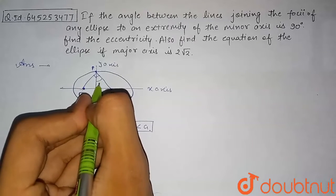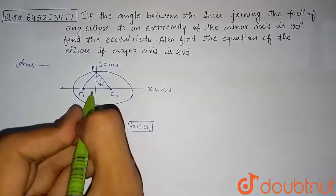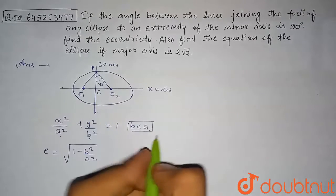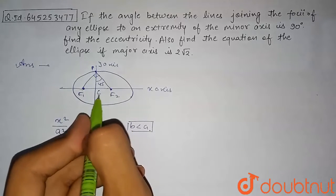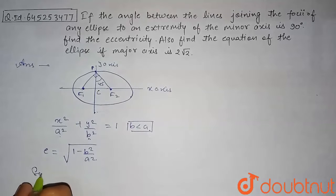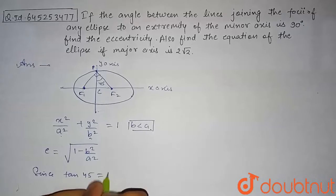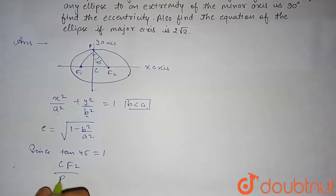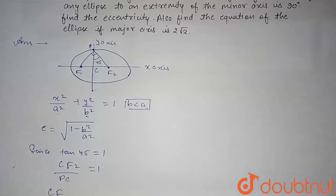Since the total angle at P is 90 degrees, each half-angle will be 45 degrees. Naming the center of the ellipse as C, since the half-angle is 45 degrees, tan(45°) = 1, which means tan θ = CF2/PC = 1, so PC = CF2.